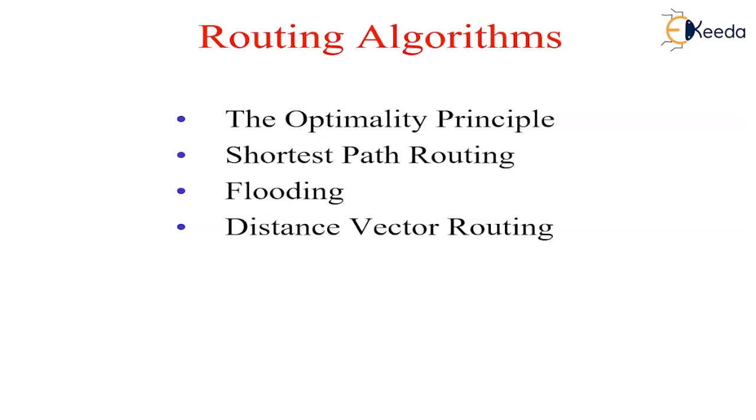Regardless of whether routes are chosen independently for each packet or only when new connections are established, certain properties are desirable in routing algorithms. These desirable properties are correctness, simplicity, robustness, stability, fairness, and optimality.